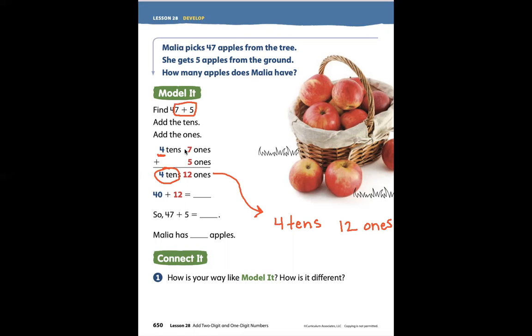Because seven ones - one, two, three, four, five, six, seven - plus five more ones - one, two, three, four, five - makes one group of 10 and two ones, which is 12.